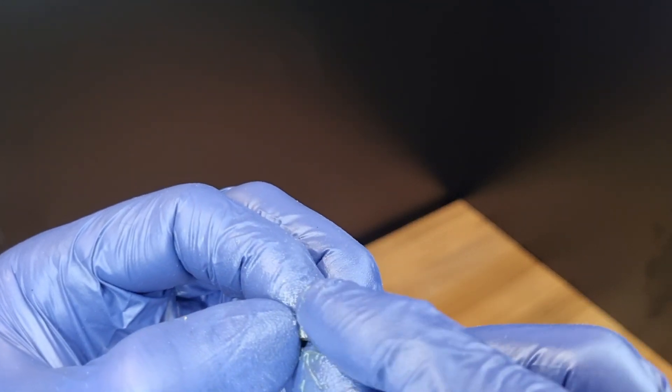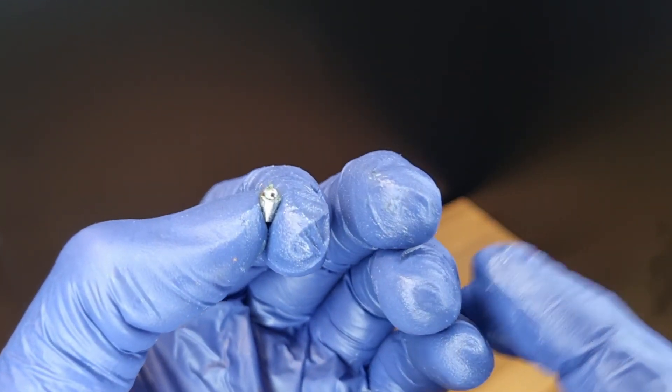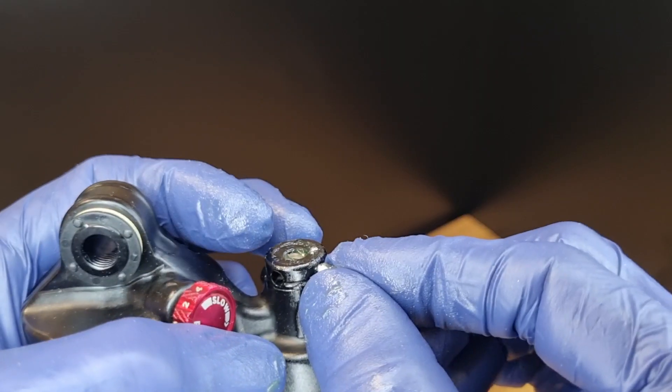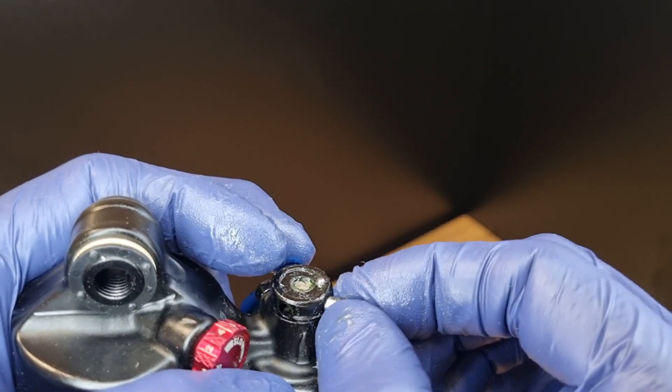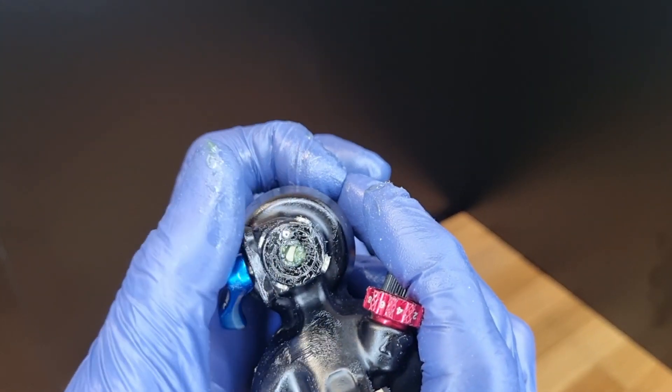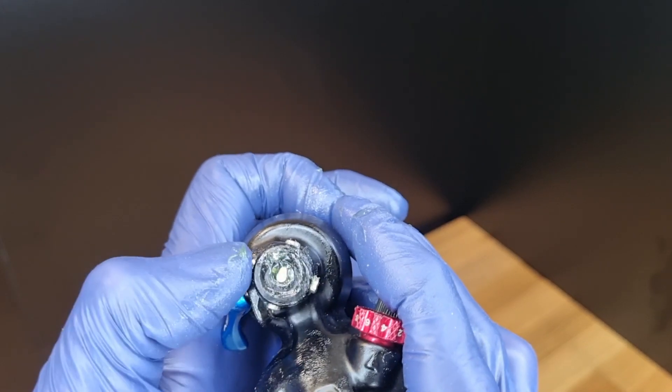Now here we go, spring ball and retainer as a unit and these go in four of them. There's one, there's two and then two more of course all the way around. Here we have them in place.